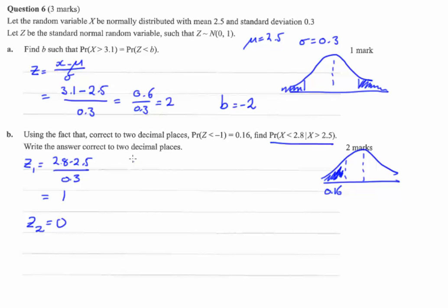Let's rewrite this statement using z values. So instead we're going to say z is less than 1, given z is greater than 0.